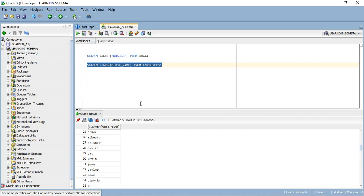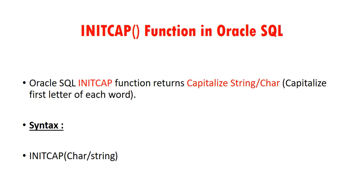Now we will see the INITCAP function. The Oracle SQL INITCAP function returns a capitalized string or character from the first letter of each word. So when you pass any string or character inside the INITCAP function, the first letter of each word will always be changed into uppercase.